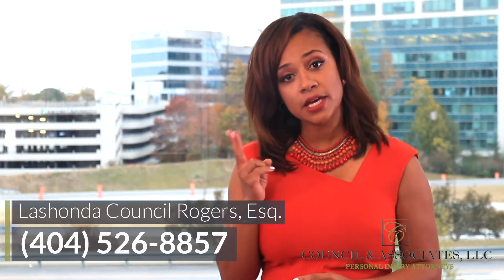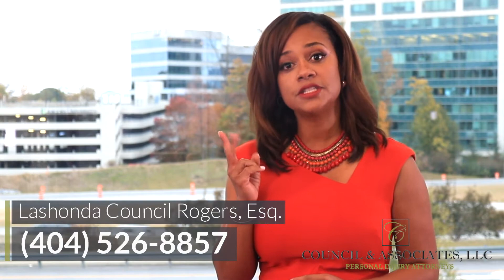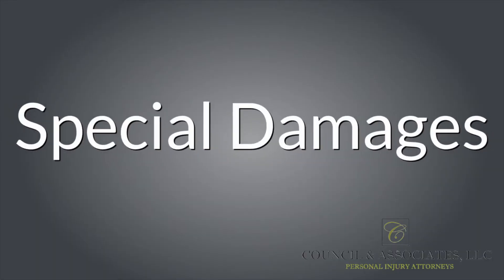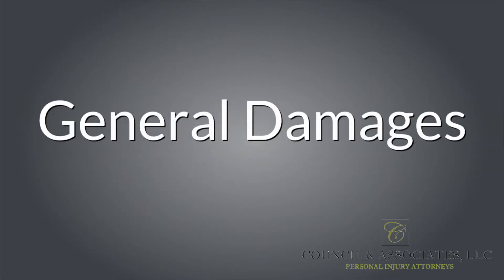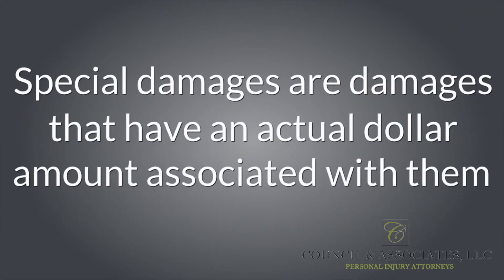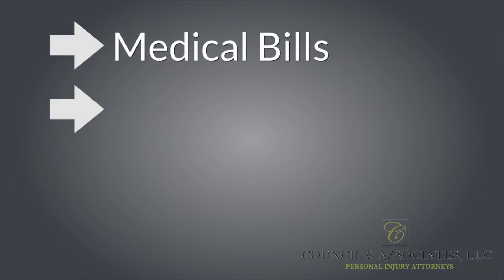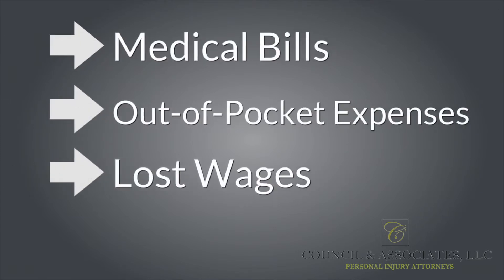There are usually two types of damages to consider in a personal injury claim, and they are special damages and general damages. Special damages are damages that have an actual dollar amount associated with them, such as medical bills, out-of-pocket expenses, and lost wages. These damages are fairly easy to calculate and prove.